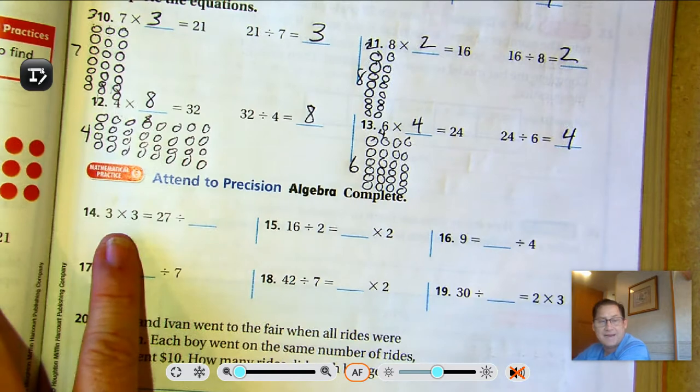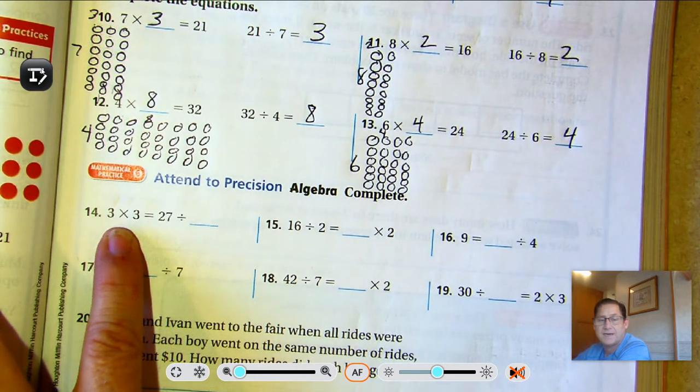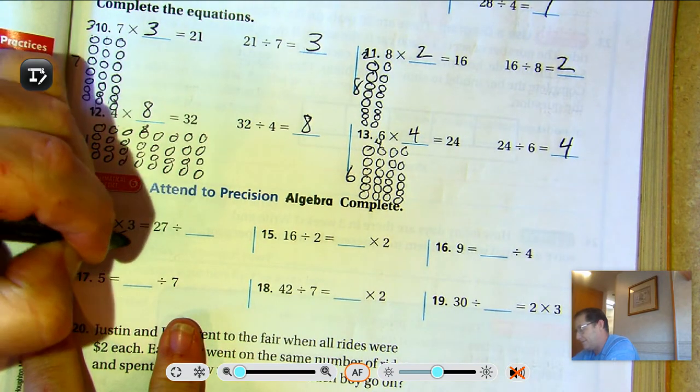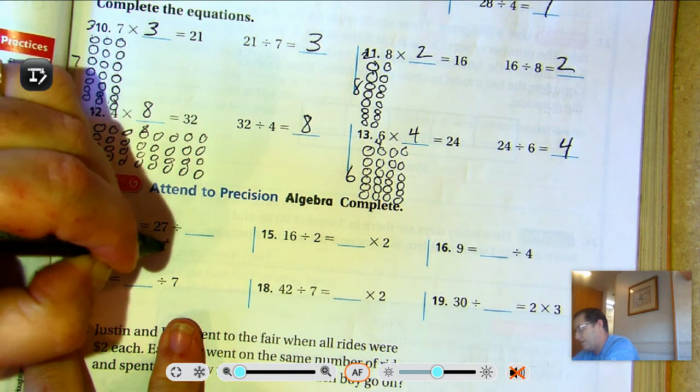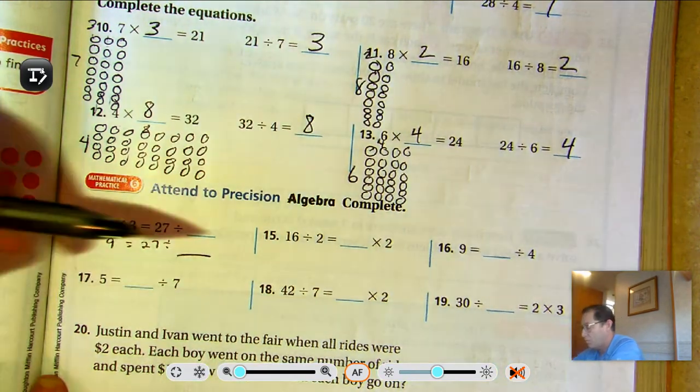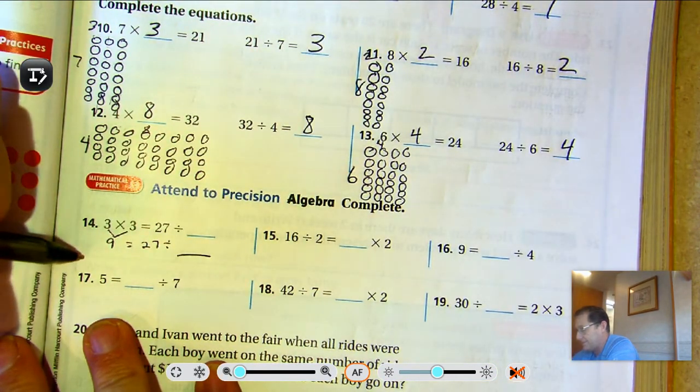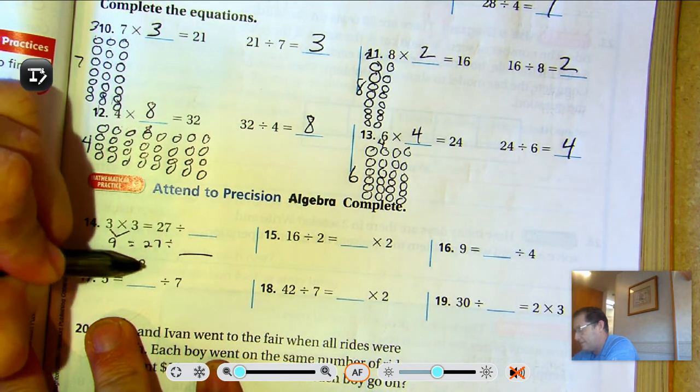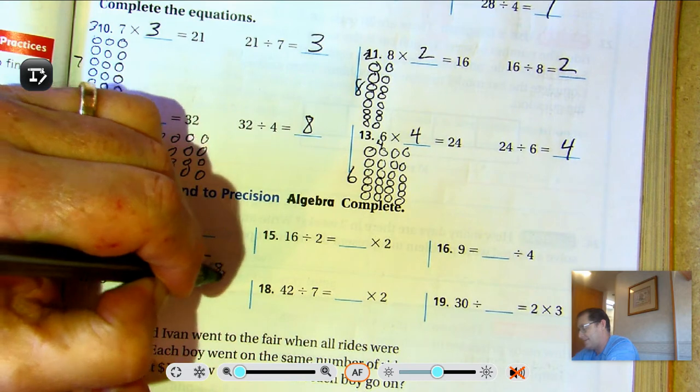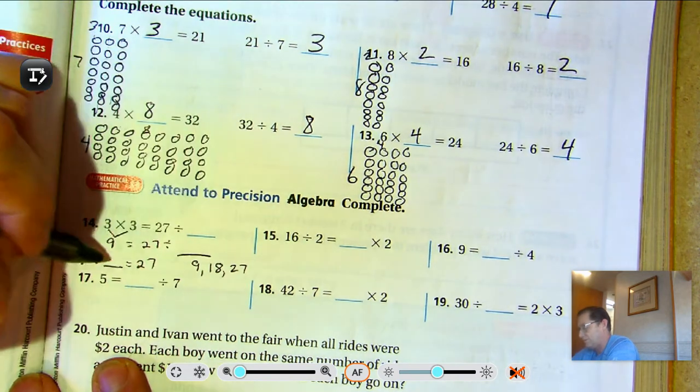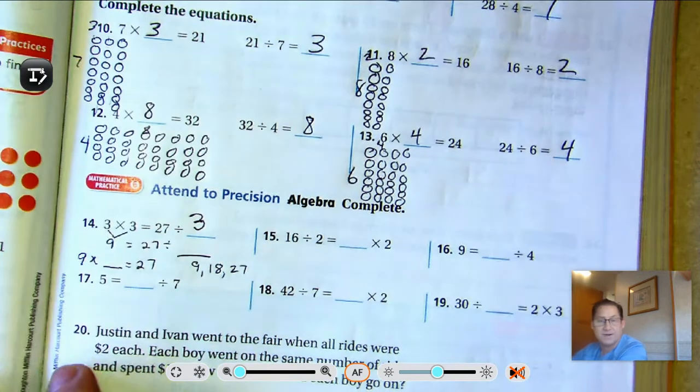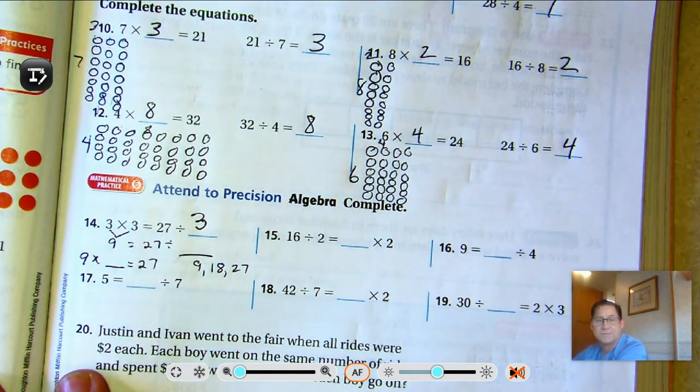So the left-hand side of the equal sign needs to equal the right-hand side. 3 times 3 is 9. So 9 equals 27 divided by what? We can skip count 9s because this is the same thing as saying 9 times what equals 27? 9, 18, 27. So 9 times 2, no wait, 27 divided by 3 equals 9.